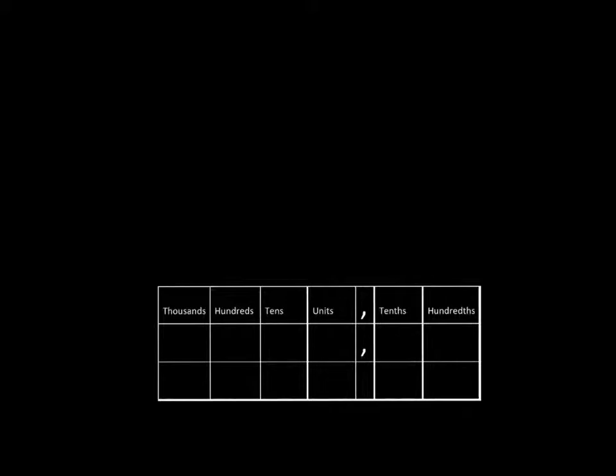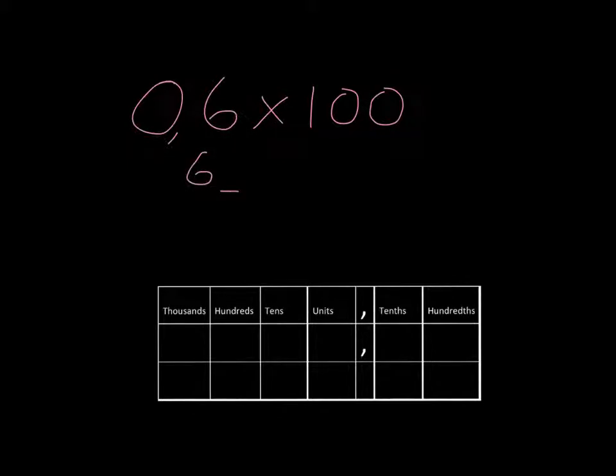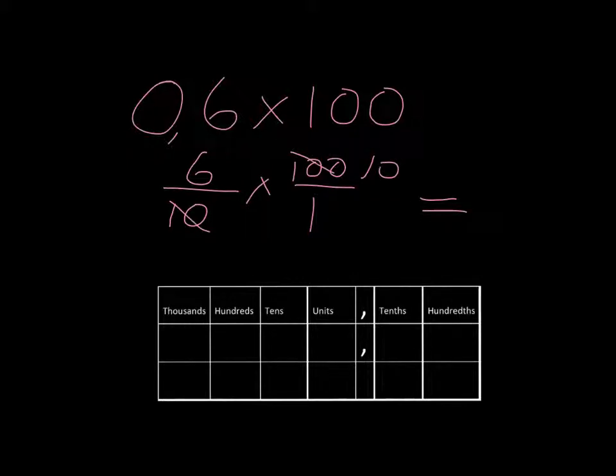Let's try instead multiplying our 0.6 by 100. Now, 6 tenths, 0.6 is just 6 tenths. If we multiply by 100, then we're going to get that and we'll cancel the 10, cancel it goes into 100 ten times. And 6 times 10 is 60.